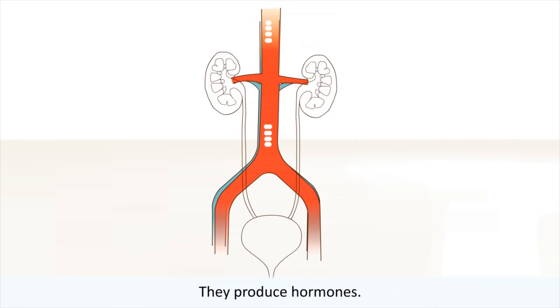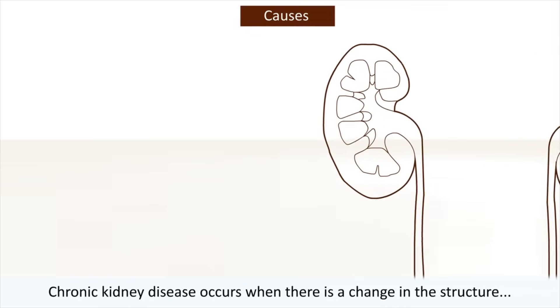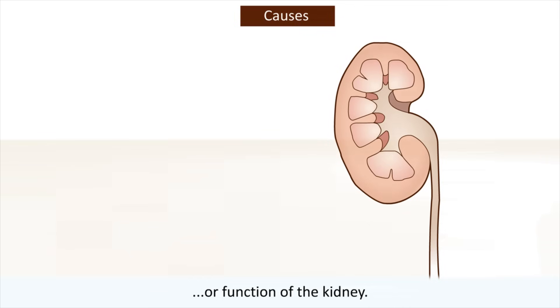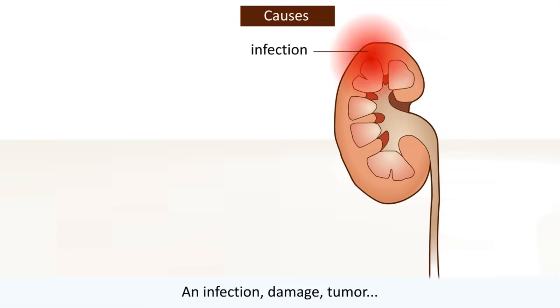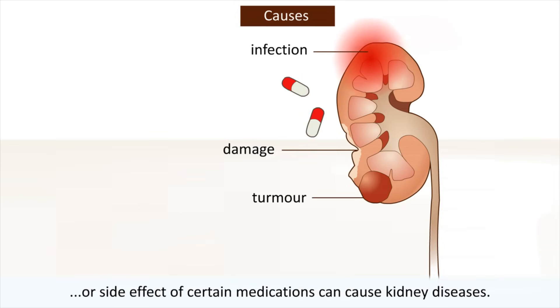Chronic kidney disease occurs when there is a change in the structure or function of the kidney. An infection, damage, tumor, or side effect of certain medications can cause kidney diseases.